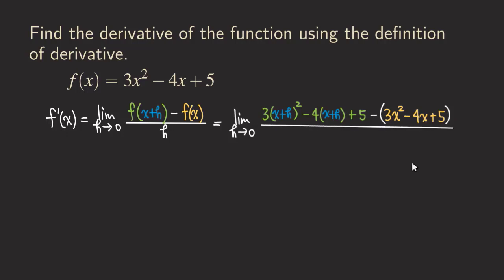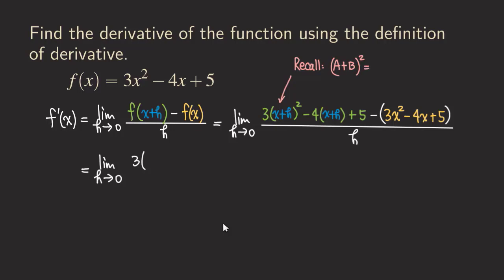The next step is to start multiplying everything out in the numerator. We have the limit as h approaching zero. Here we have x plus h squared, and there is a formula we can use. We can square the first term, square the second term, and add twice the first term multiplied by the second term. Recalling that (a + b)² = a² + 2ab + b². So we write x squared, plus two times xh, plus h squared.